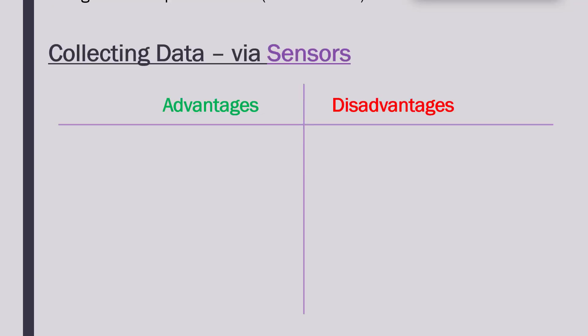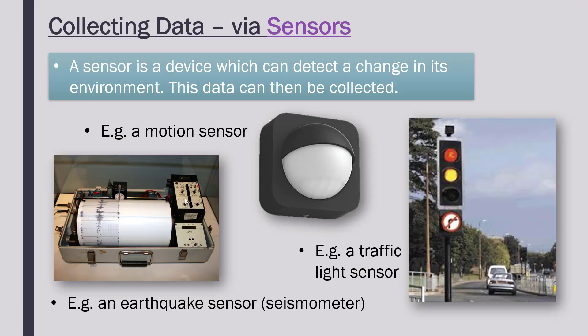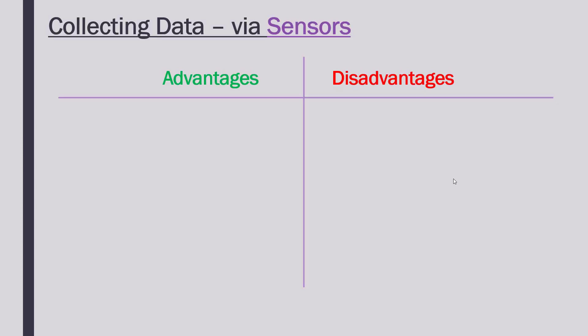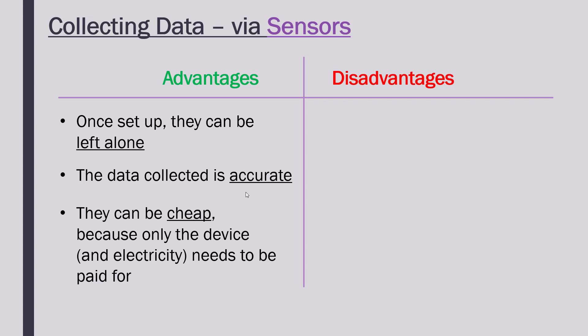Let's evaluate sensors. What's good is that once you set them up, they can be left alone — there isn't someone from a council sat next to every traffic light checking if it's working. Also, in theory, the data they collect is accurate. A temperature sensor will be more accurate than someone stood there with a thermometer — sensors can be very precise with their readings. They can also be quite cheap, especially long-term, once you've bought the device.